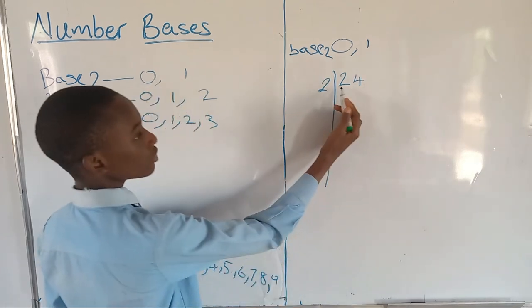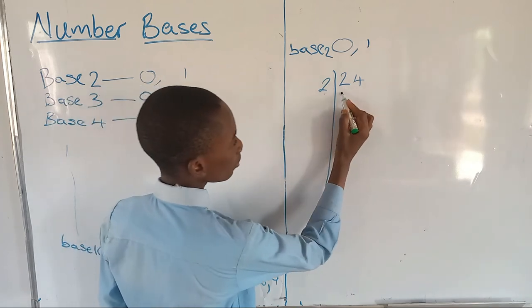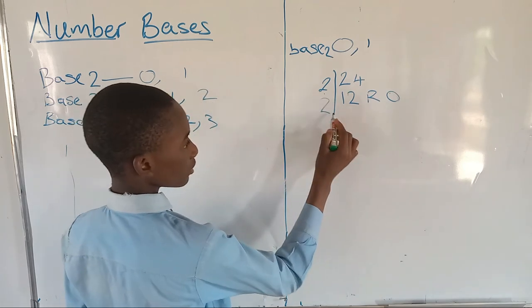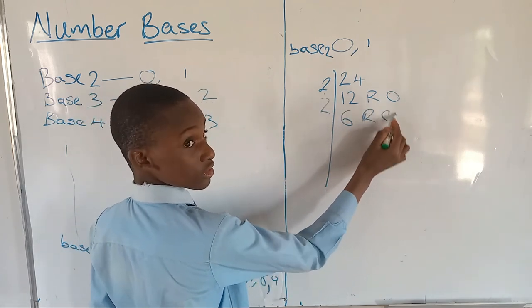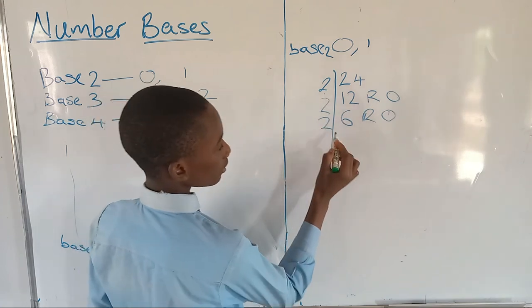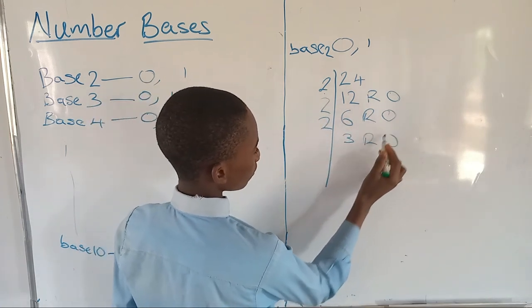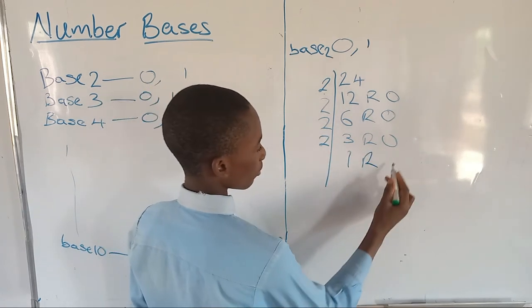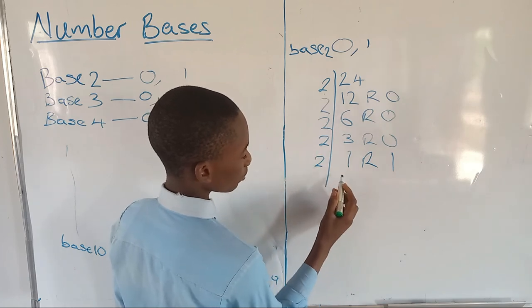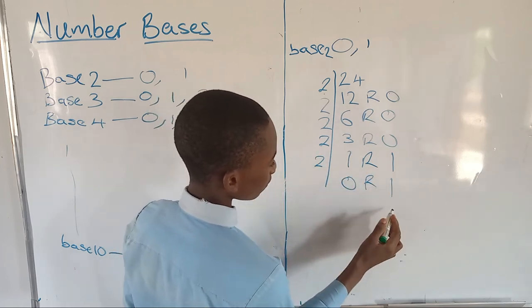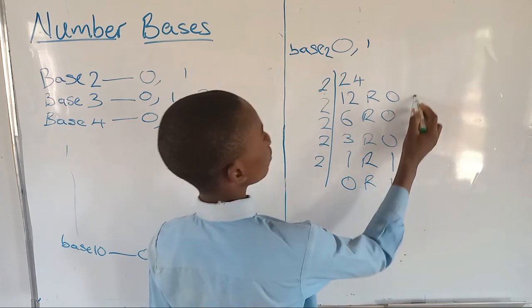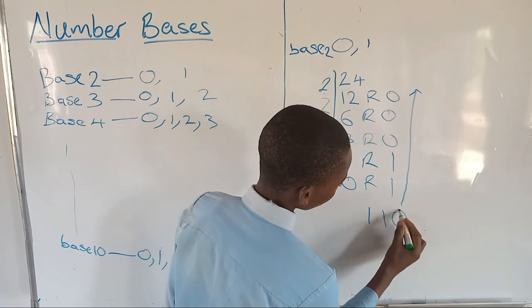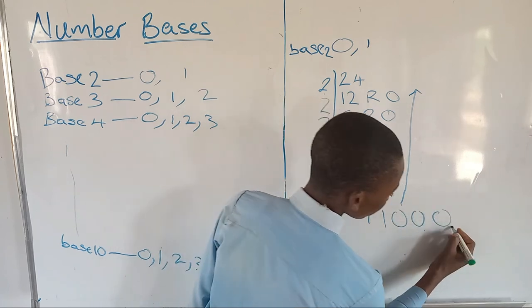So twenty-four divided by two is going to go twelve times, remainder zero. Two into twelve goes six times, remainder zero. Two into six goes three times, remainder zero. Two into three goes once, remainder one. Two into one goes zero times, remainder one. So we get 11000 in base two.